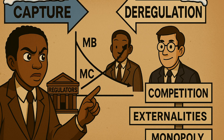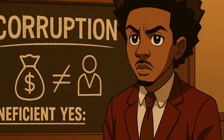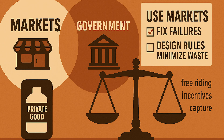Sixth, regulatory capture: regulators can be influenced by the industry they regulate. Deregulation can help if competition disciplines firms; otherwise, externalities or monopoly power can make regulation necessary. Seventh, corruption: abuse of public power for private gain undermines efficient allocation and trust. Campaign finance rules try to limit undue influence, but gray areas remain.